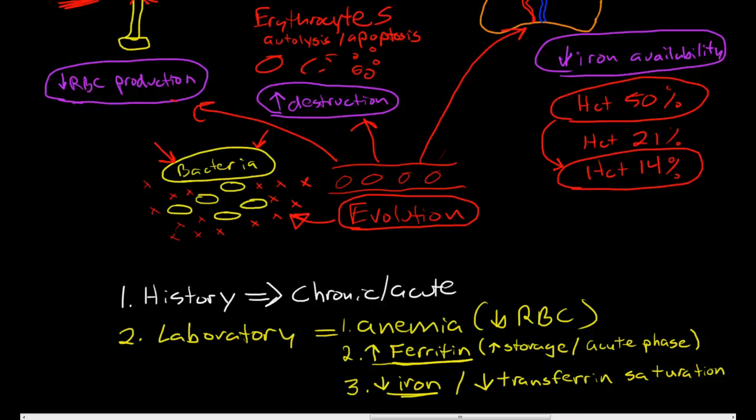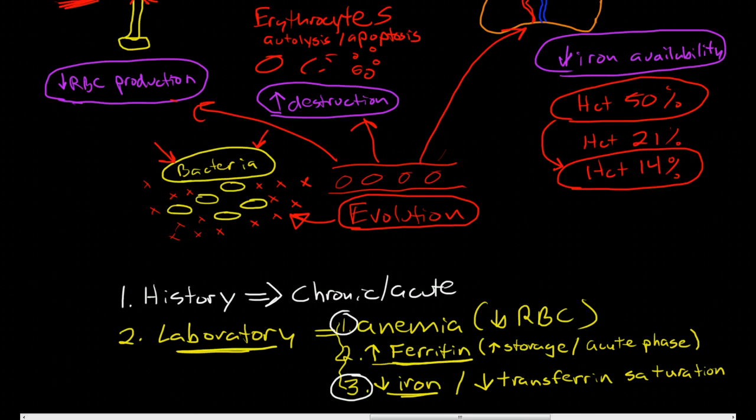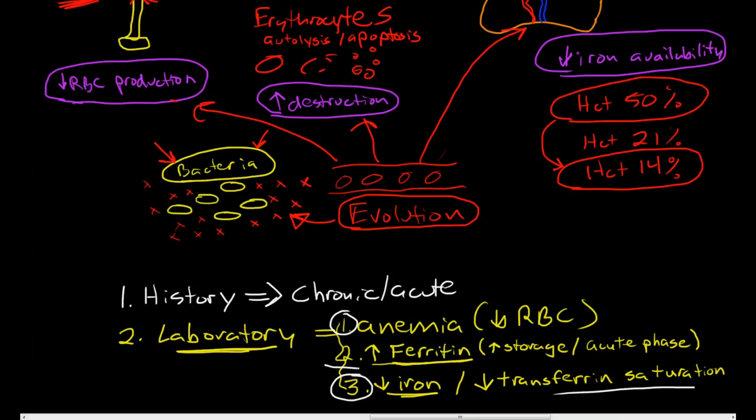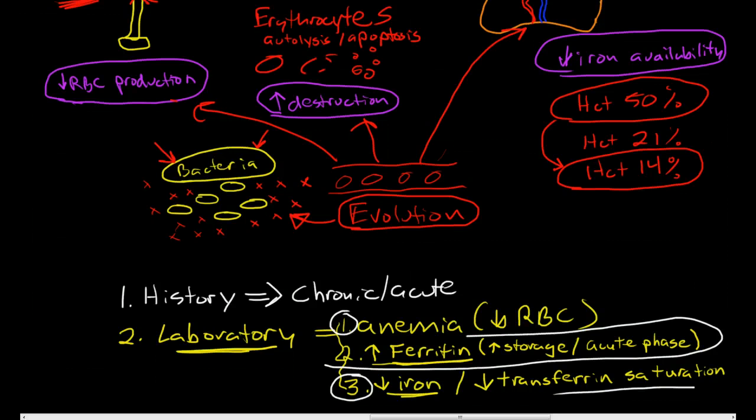So those are going to be the three main signs in laboratory analysis. Now, you need to be very careful, because I've seen a lot of people make the assumption that a patient who's anemic with decreased iron and transferrin saturation must be iron deficient, and they completely missed the point that the ferritin is high.